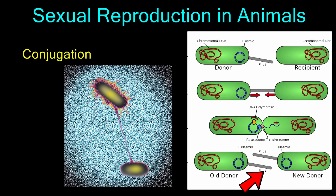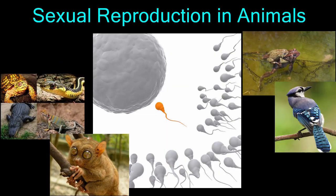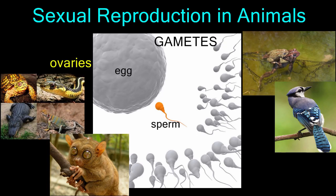After the exchange, the cells separate and undergo mitosis to produce genetically unique offspring. In the animal kingdom, sexual reproduction begins with the formation of gametes — egg and sperm. Eggs are produced in organs called ovaries, and sperm are produced in organs called testes.